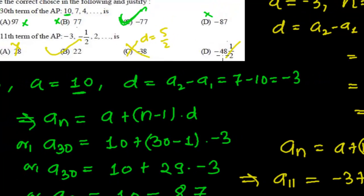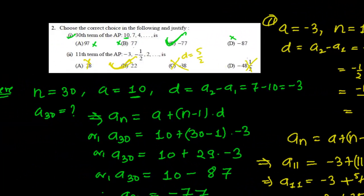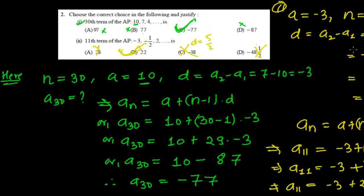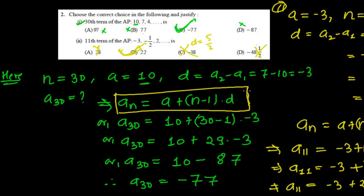So we got the 11th term as 22 — that's the correct choice. Like this, we have to apply the nth term formula and find out whatever term you need. That's the nth term formula we have learned many times — it's really important. If you know any three of the four values — the nth term, first term, n, or common difference — you can easily find the fourth one.